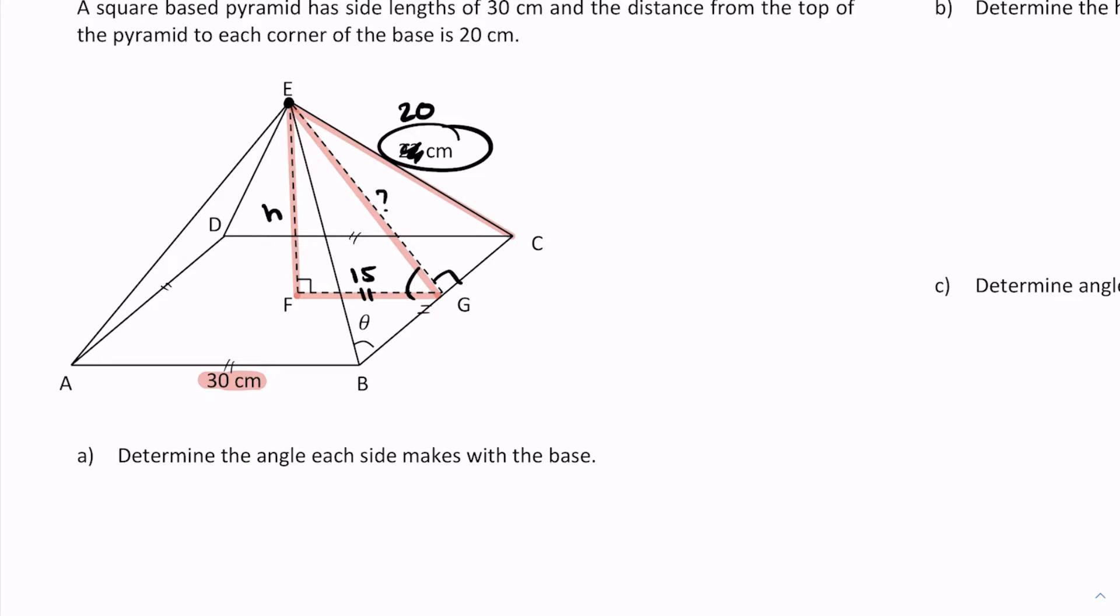In order to use SOHCAHTOA—because I think that's the natural idea I want to employ here given that I have a right angle triangle—I need to have at least one more piece of information, and that base doesn't cut it.